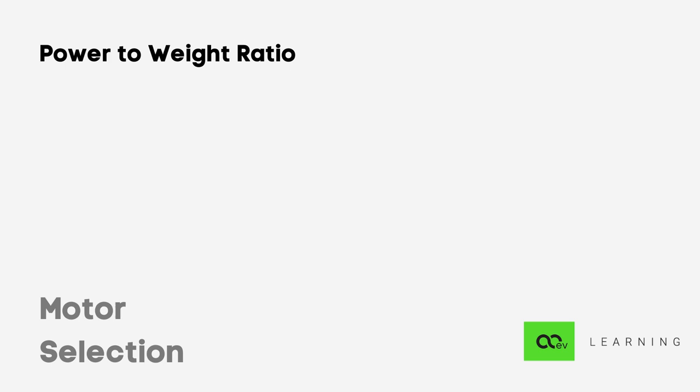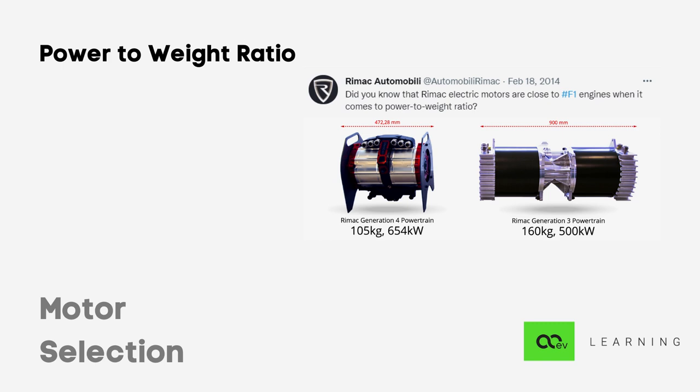The power-to-weight ratio gives us an idea about how much power can it churn out per unit mass. The higher the better.